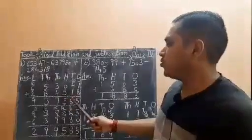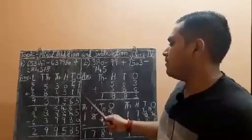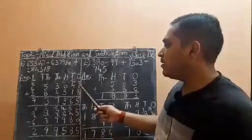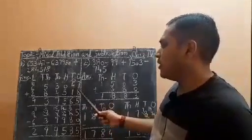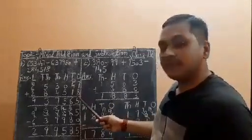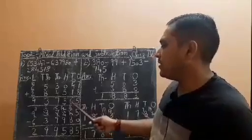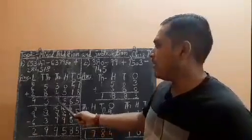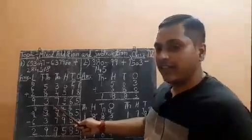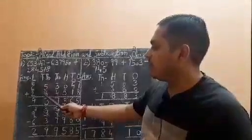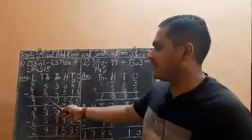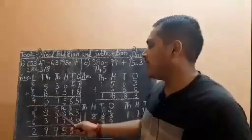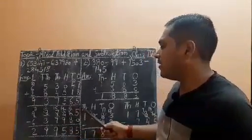I have written these two numbers. Now adding: 7 plus 8 is 15, write 5 and carry 1. 1 plus 4 is 5, 5 plus 1 is 6. 0 plus 5 is 5. 3 plus 4 is 7. 5 plus 8 is 13, write 3 and carry 1. 1 plus 6 is 7, and 7 plus 2 is 9. So after adding, the answer is 9,37,565.